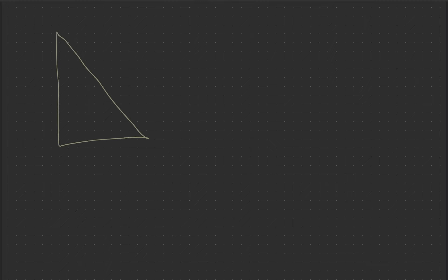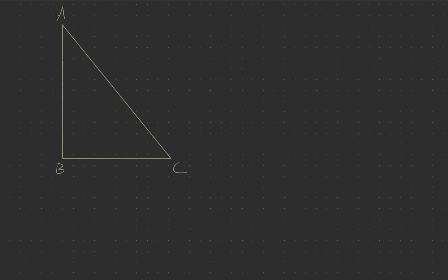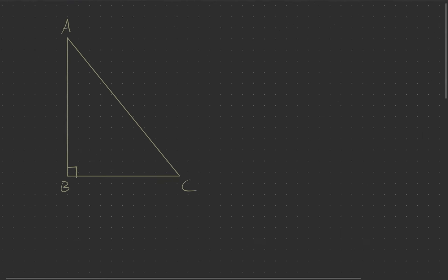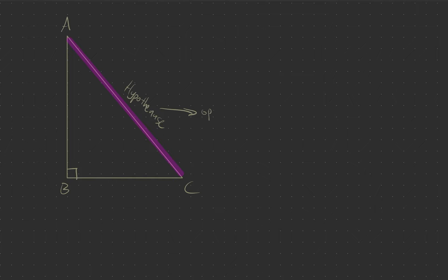So now I'm just going to draw a right angle triangle, and this is triangle A, B, C. So the right angle is right over here. This side over here, we call this the hypotenuse. The hypotenuse is the side which is opposite of the 90 degree angle in the right angle triangle, and it is also the longest of the three sides.